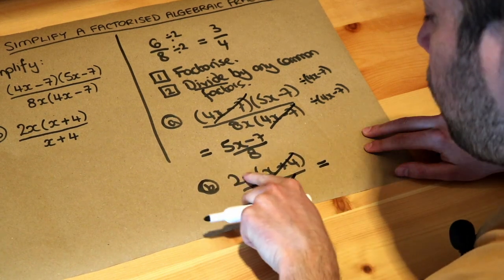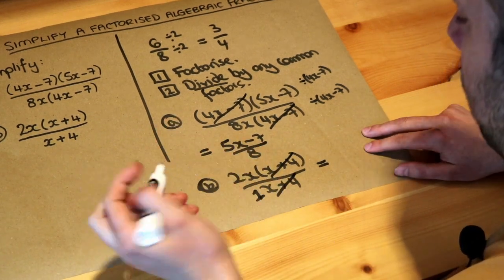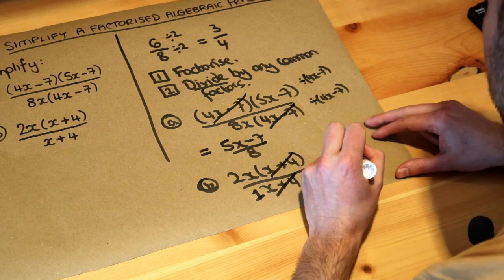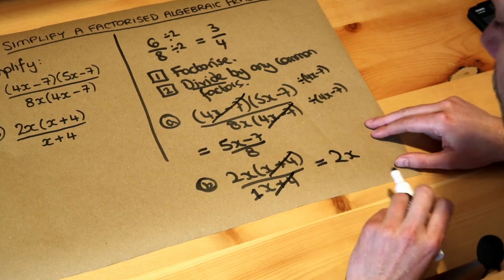And then, what's 2x divided by 1? Anything divided by 1, it's just itself. So you've just got the 2x. And that's the final answer.